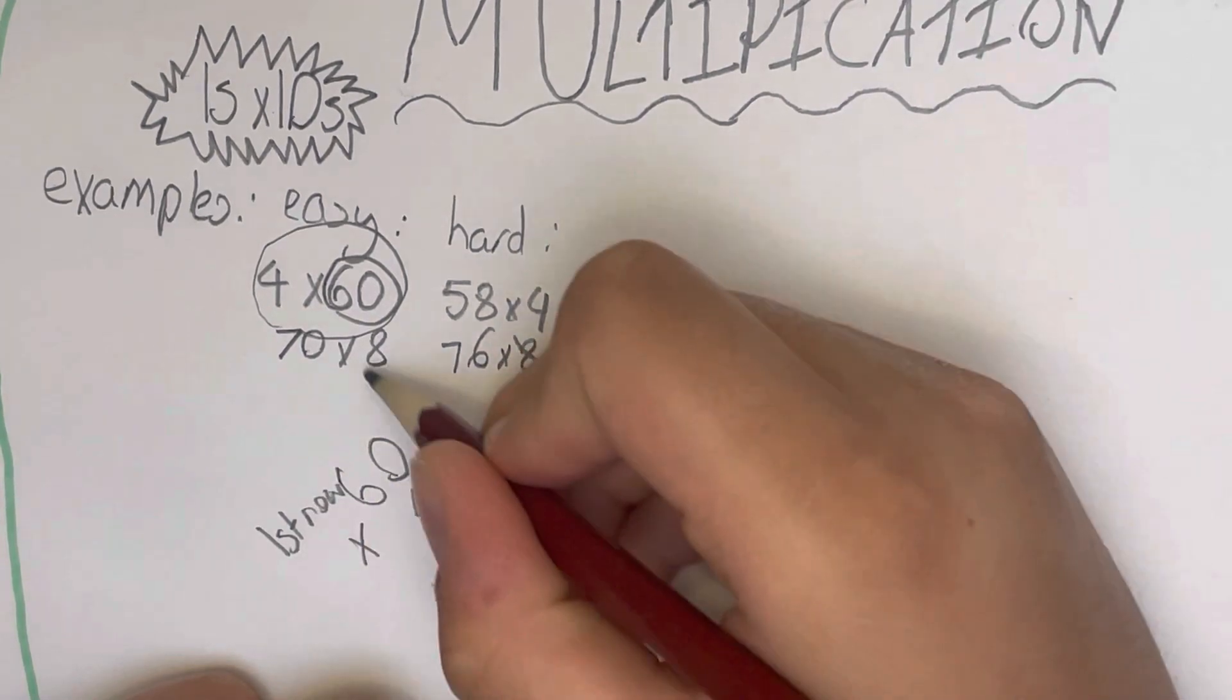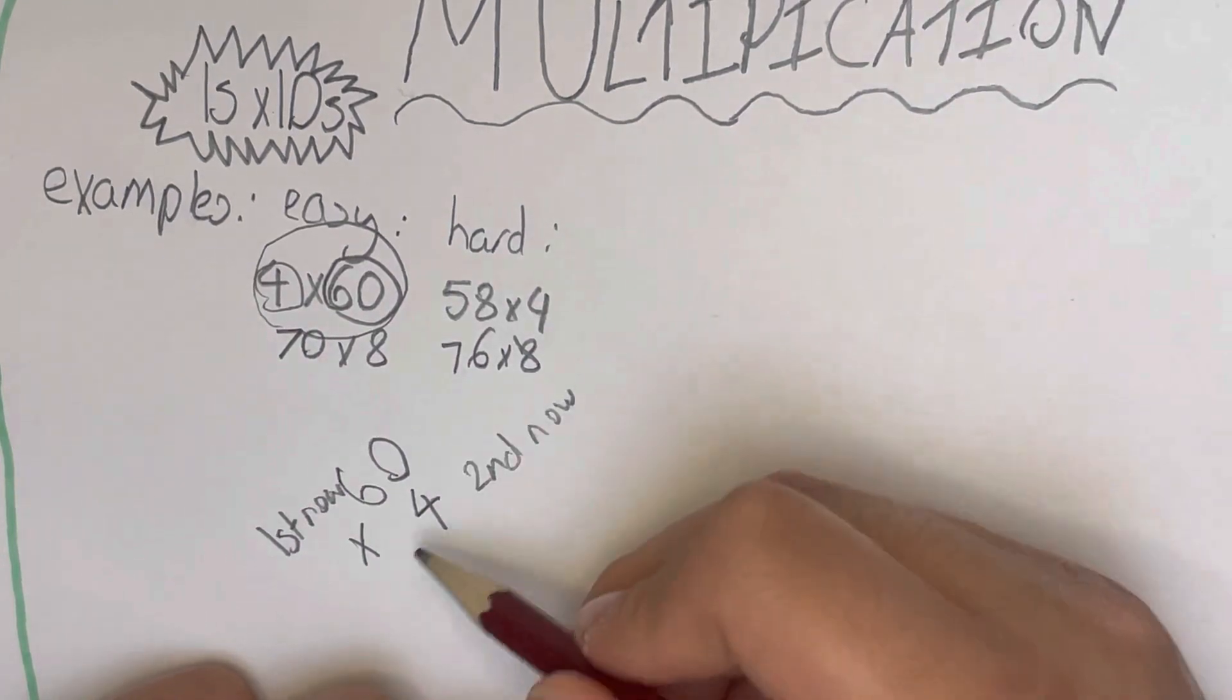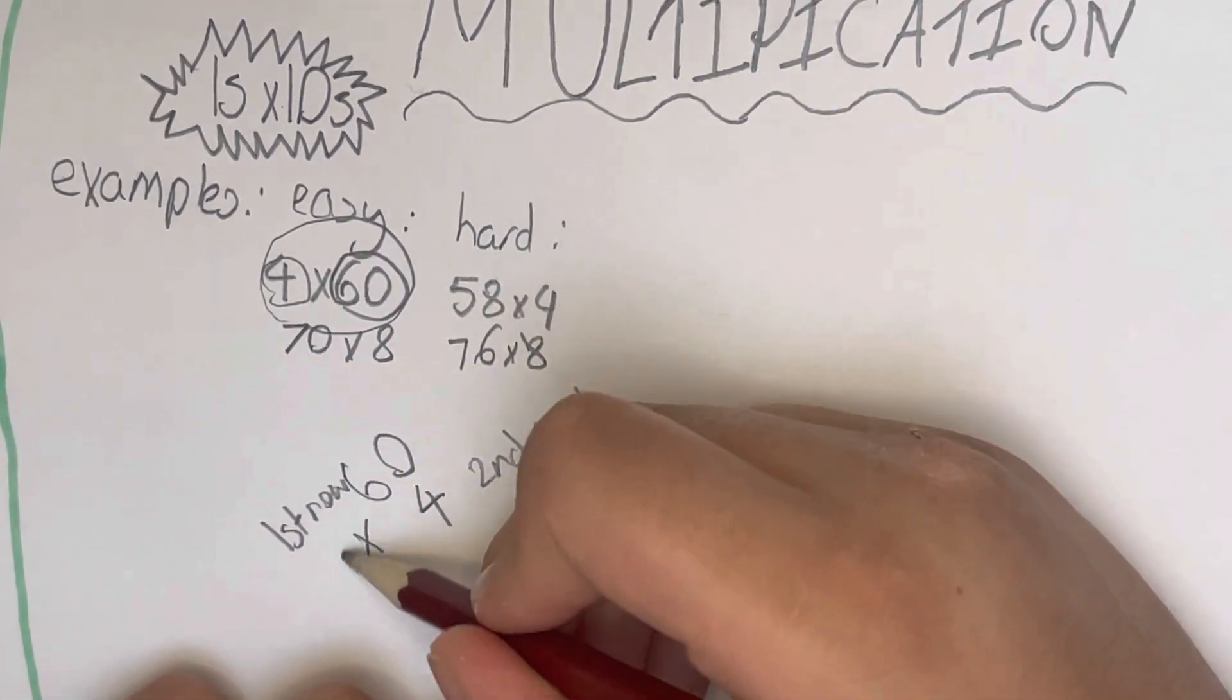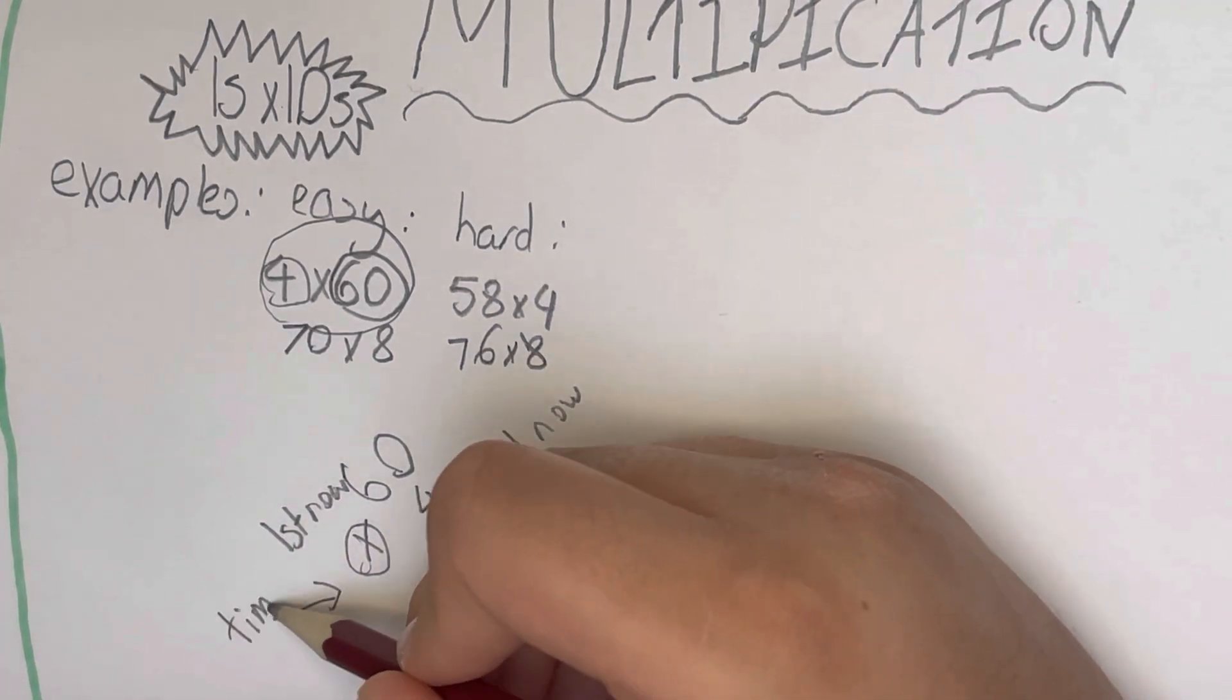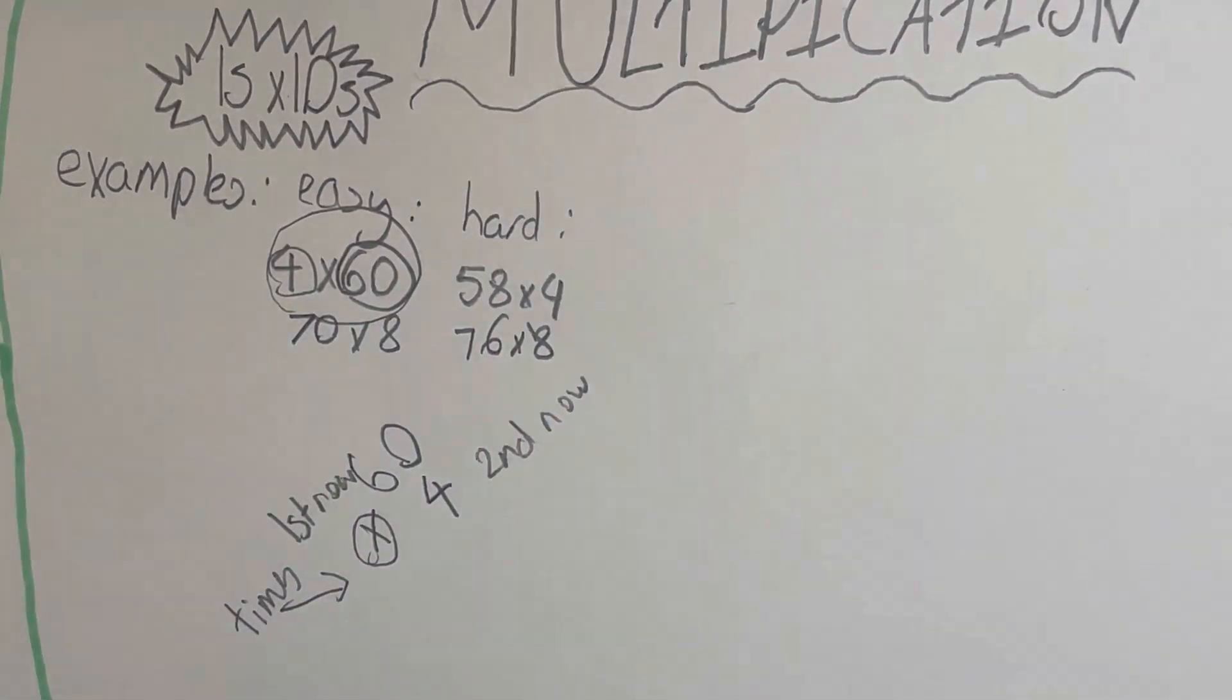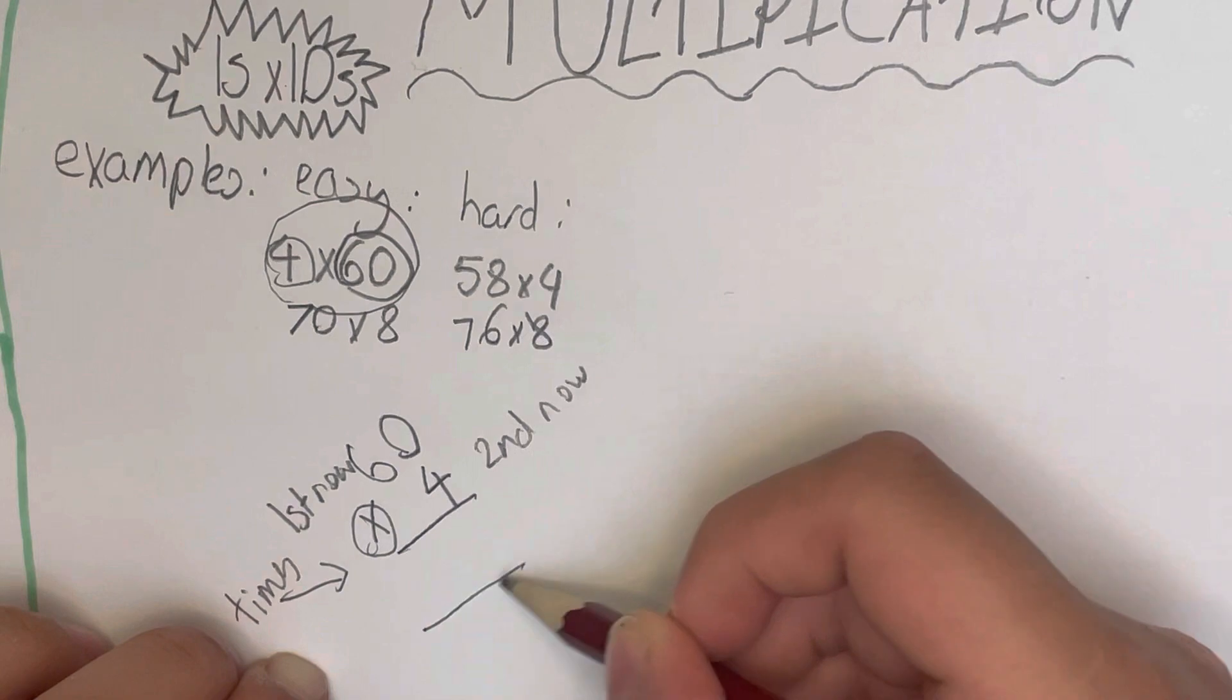So what I'm going to be doing here is timesing, which means times. I'm going to be timesing 0 by 4 first, because 0 is the first number, as you can see right there.